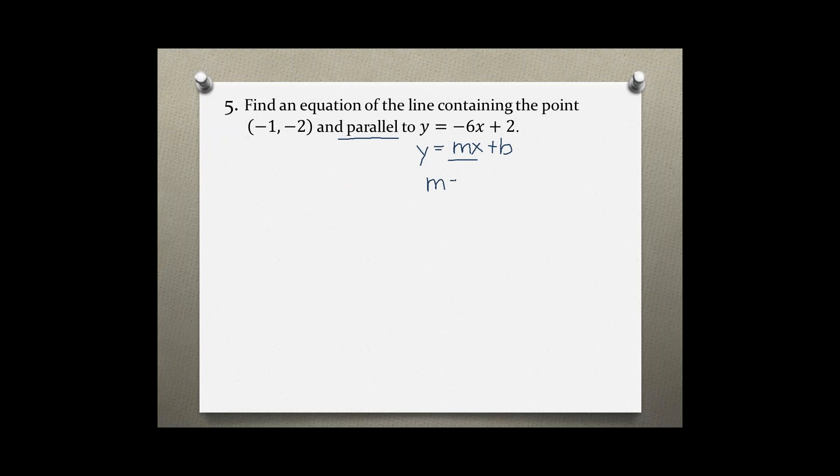So in this case m = -6. Parallel lines have the exact same slope, so this is the slope also of my new equation. This equation goes through the point (-1, -2), so I can use my point-slope form of an equation to find this equation.